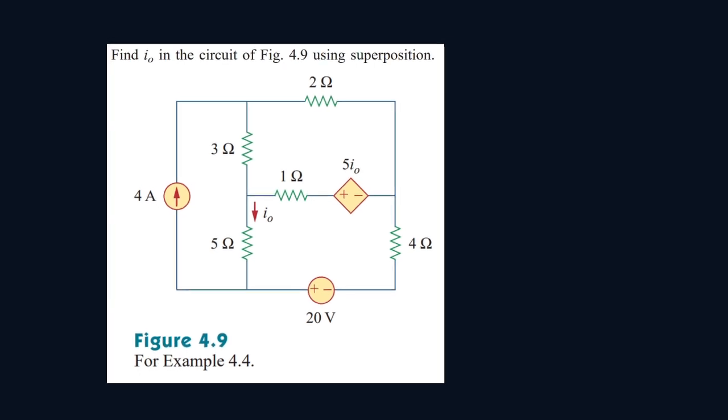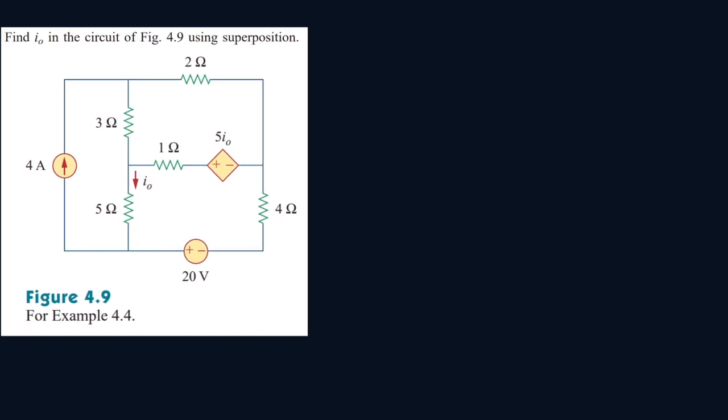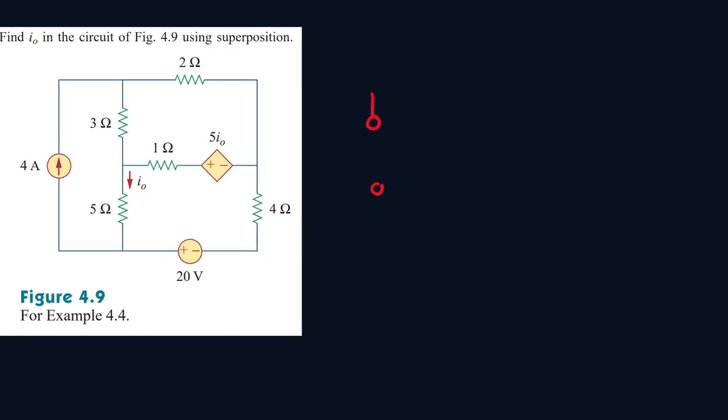Alright, so we have the following circuit here. We have to find I_O using the superposition theorem. So we're going to turn off this current source here. We also can't turn off this source because it's a dependent source. So dependent sources, you cannot turn them off. So we're going to start by turning off our current source. So it'll be an open wire.